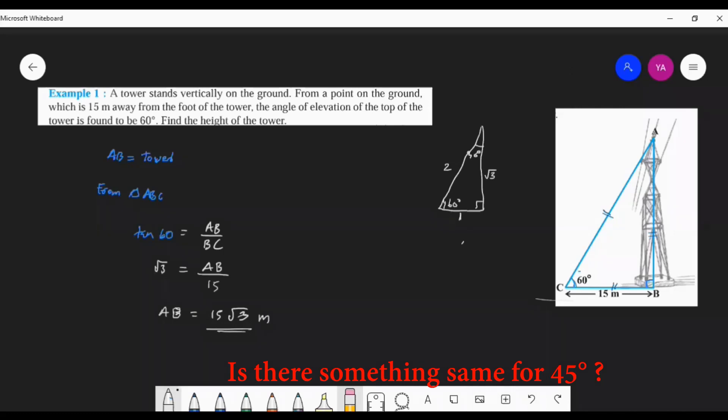45° also we have a table we want to memorize. Otherwise you simply memorize these pictures. From these pictures you can make all those values. So suppose we take in a 45°-45° triangle, suppose we take one of the perpendicular sides as 1, then what will be the second perpendicular? One. What will be the hypotenuse? Root 2.